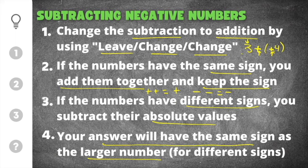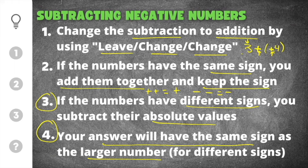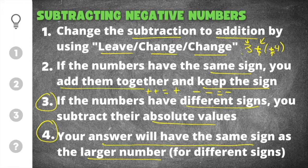You'll notice steps three and four are the same exact rules for adding negative numbers. The reason for that is because once you do leave change change, you're changing the subtraction problem into an addition problem, and once it's an addition problem you follow the rules for adding negative numbers. So if you already know how to add negative numbers, you're already pretty good at subtracting negative numbers — you just have an extra step or two.